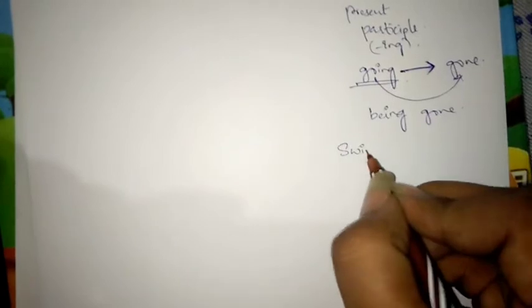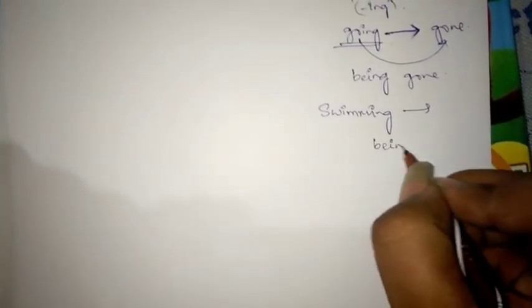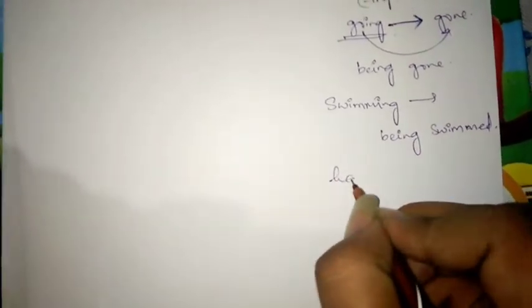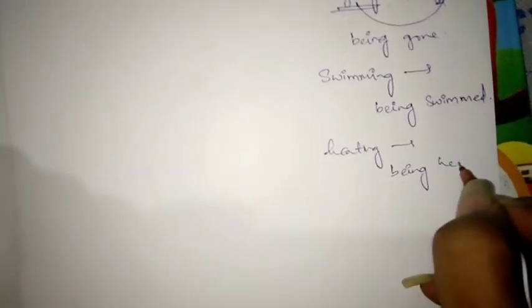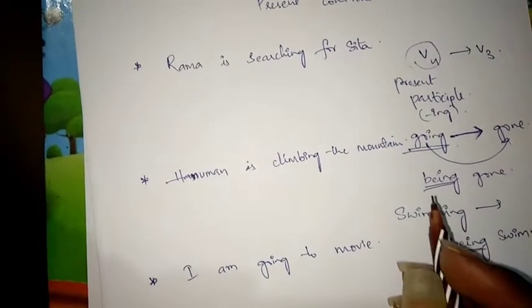For example, changing any verb like 'swimming' — if we have to change 'swimming' into V3 form, it changes to 'being swum'. Another example: 'heating' changes into 'being heated'. So 'being' is used while changing V4 into V3. Now let us start with an example of present continuous tense.